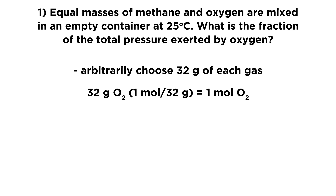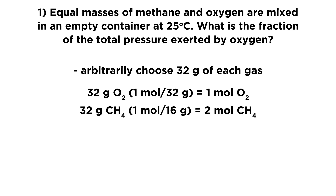We have 32 grams of oxygen times one mole per 32 grams, because 32 grams is the molar mass of O₂. So we have one mole of oxygen. Then we have 32 grams of methane as well, times one mole over 16 grams, because methane has a molar mass of 16. So that means we have two moles of methane.